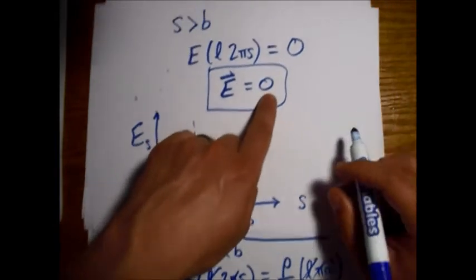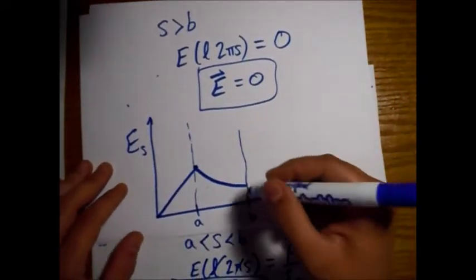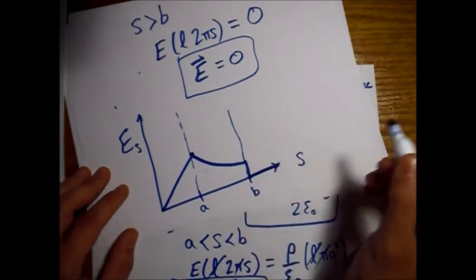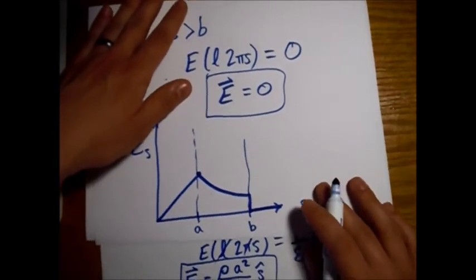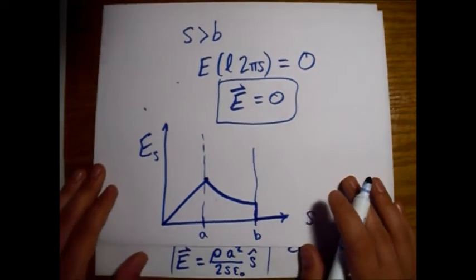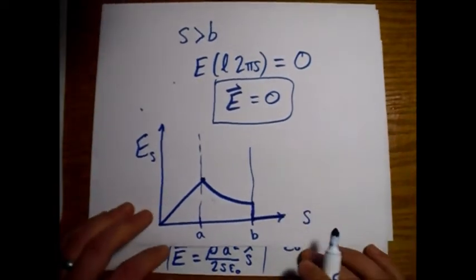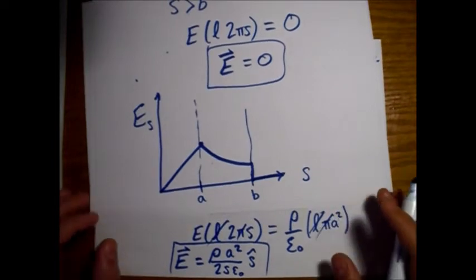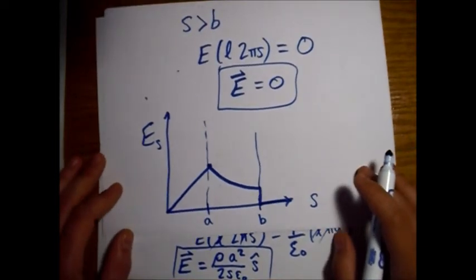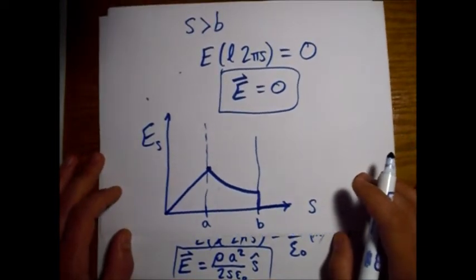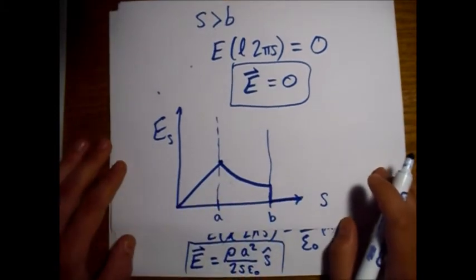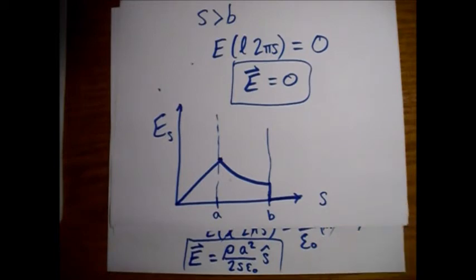Now outside, we drop down to zero. This is gonna come straight down. Whenever you have a surface charge density sigma, there's going to be a discontinuity in the electric field. So this is what our electric field looks like as we go out.